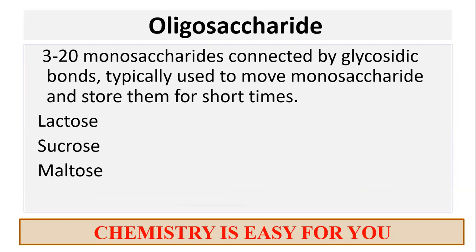Now let's go to oligosaccharides. Three to twenty monosaccharides connected by glycosidic bonds make up an oligosaccharide. These are typically used to move monosaccharides and store them for short times. The examples for oligosaccharides are lactose, sucrose and maltose. The sentence to memorize these three is: 'lowly summa.'